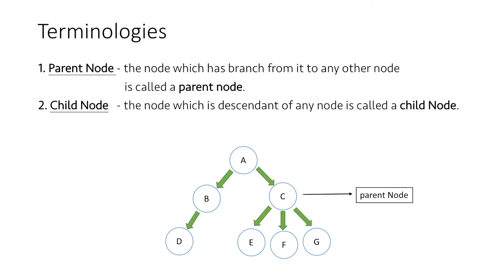Similarly, if we take node C as the parent node, then nodes E, F, G are its child nodes. One thing to note here is all nodes except A are child nodes, as all nodes except A have a parent node.